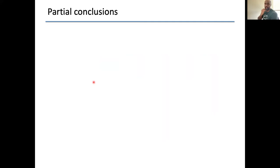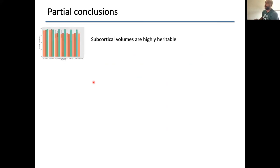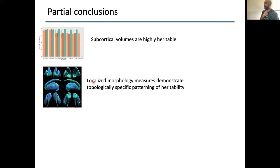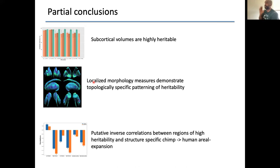Partial conclusions for this part: one, subcortical volumes are highly heritable, not surprisingly. Two, localized morphology measures demonstrate a topologically specific patterning of heritability — just because volumes are very heritable doesn't mean the overall structure is uniformly so. Three, there are putative inverse correlations between regions of high heritability and structure-specific aerial expansion going from chimpanzee to human. These are areas of further exploration in the lab.